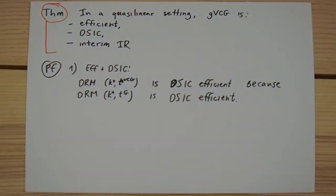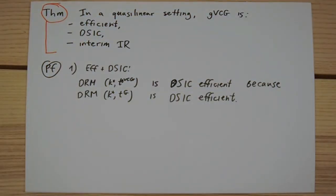Therefore, the only thing we need to show to prove the statement is that generalized VCG mechanism is interim individually rational.